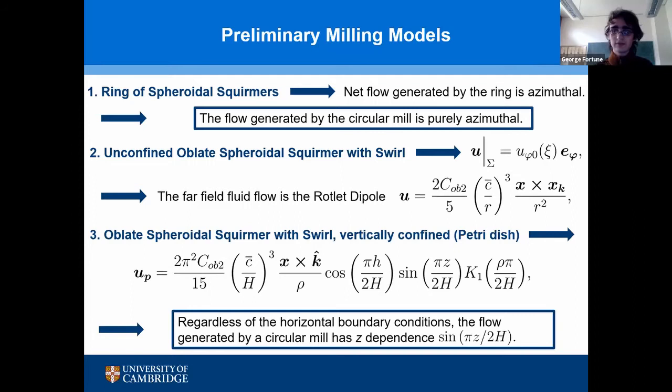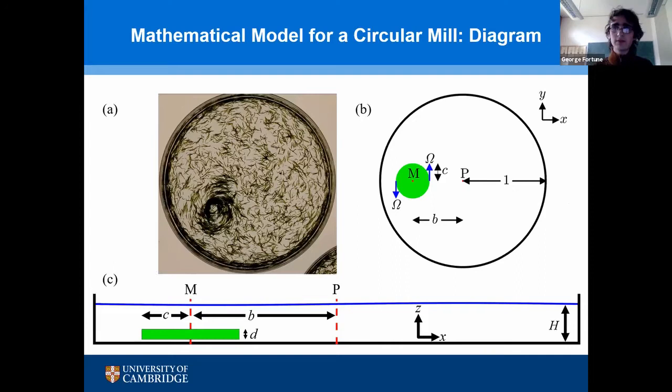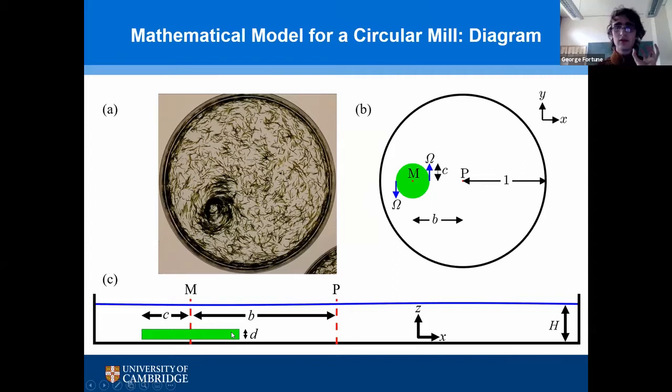So now we are in a position to model a circular mill in its entirety — when it is not only vertically but also horizontally confined. For mathematical simplicity, we consider the simplest model mill: a rotating disk of radius c and height d, a distance b from the centre of a petri dish of radius 1 filled with water of height h. I define a local coordinate system in the frame of the mill: x lies on the line between the centre of the mill and the centre of the petri dish, z is vertical, and y is perpendicular to both x and z.